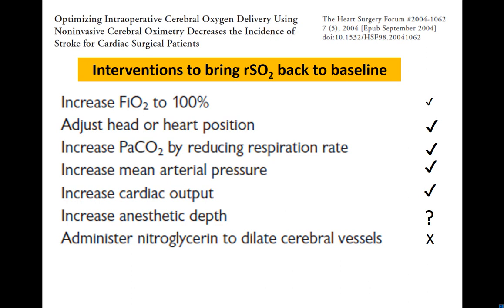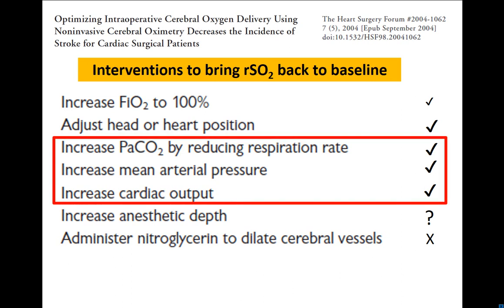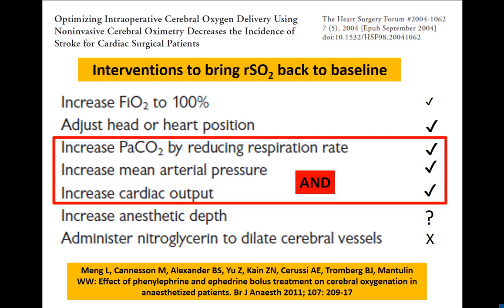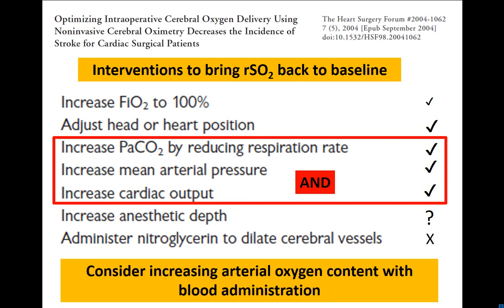When RSO2 drops, what do I do? Some interventions are listed here: adjusting head position can sometimes relieve kinking of venous return. The major ones include watching end-tidal CO2 — it's very easy to hyperventilate an elderly patient, so reduce respiratory rate and keep it in the high range of normal. Increasing mean arterial pressure is important, but as I mentioned in the first half, we've also got to increase cardiac output. Just increasing mean arterial pressure alone without knowing what's happening to SVR may not produce benefit. Particularly in the elderly patient, also consider increasing arterial oxygen content, as some elderly patients cannot tolerate a haemoglobin of only 80 g/L.